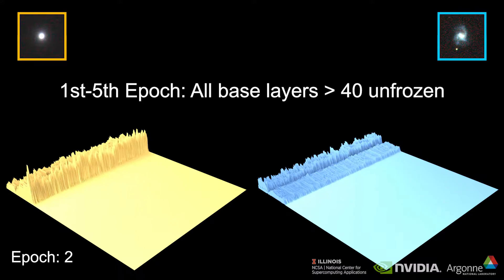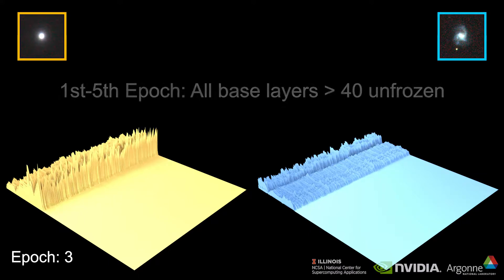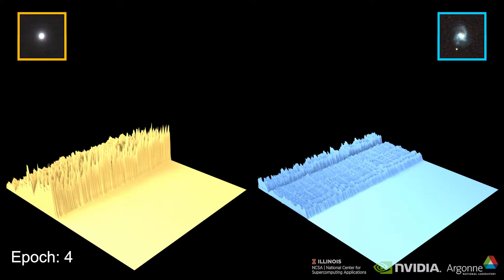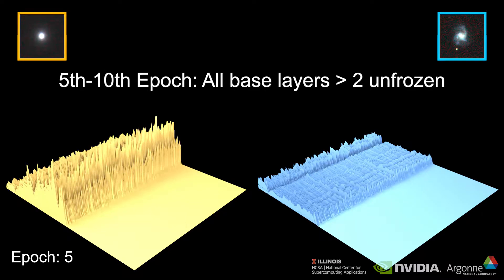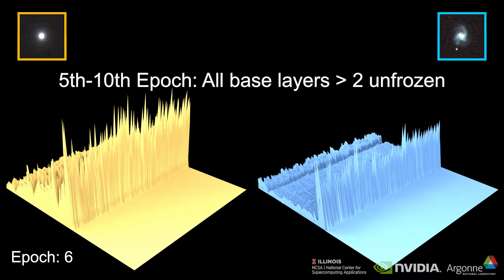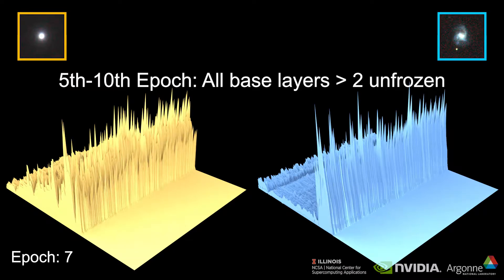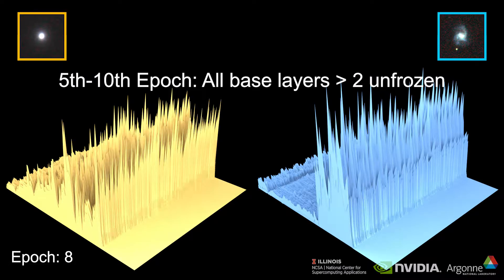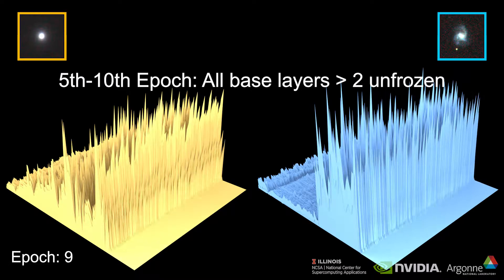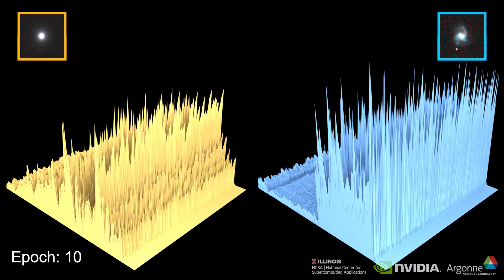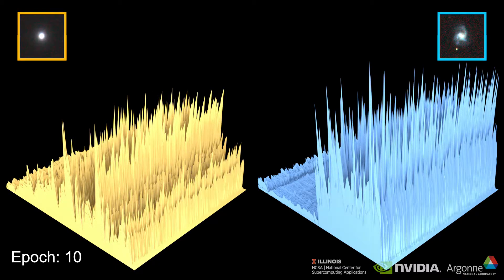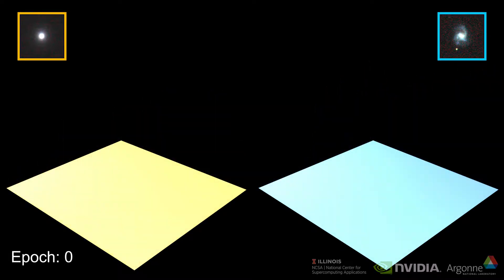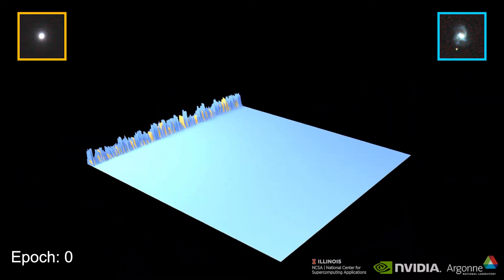As training progresses, we unfreeze layers in the network, allowing their weights to be adjusted and learn distinct features in the images. We can see that unfreezing layers during the fifth to tenth epoch causes a large response from the network to the spiral galaxy image. These newly activated layers are important for allowing the network to learn certain features.